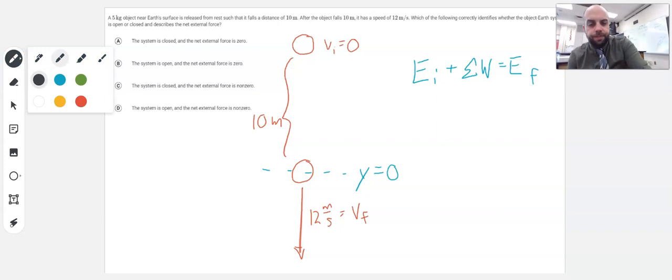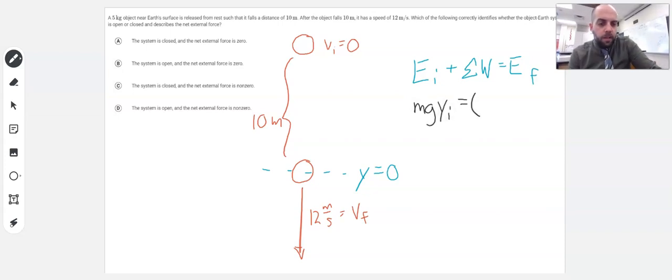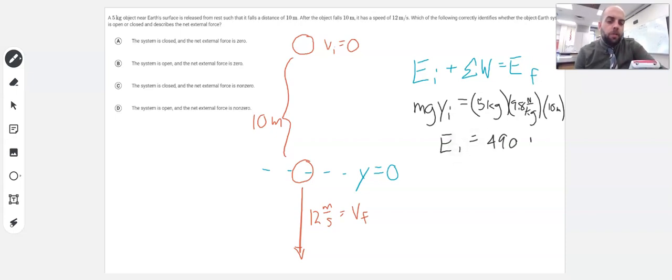So let's see. In the beginning, I've got gravitational potential energy, and that is mgy. That is equal to 5 kilograms, the mass of the object, times 9.8 newtons per kilogram, times this height of 10 meters. So 5 times 9.8 times 10 gives me an initial energy of 490 joules.